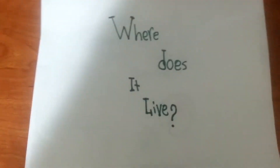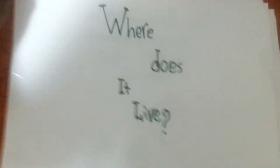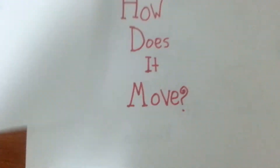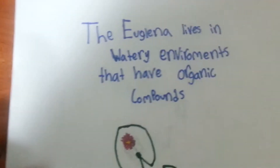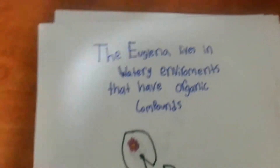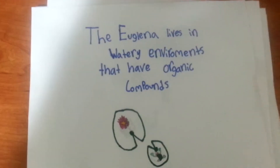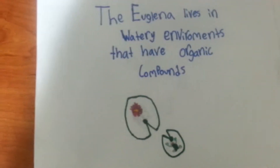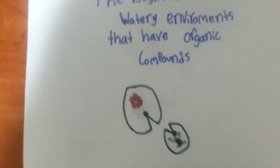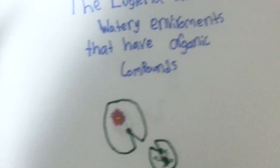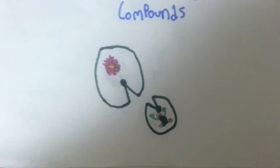So where does the euglena live? Well, the euglena lives in watery environments that have organic compounds, like plants, such as water lilies, and other organisms, like frogs.